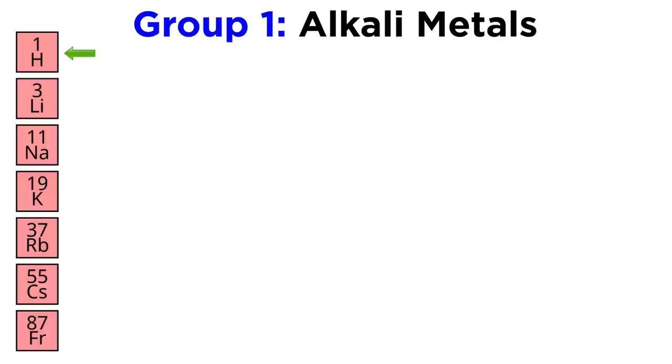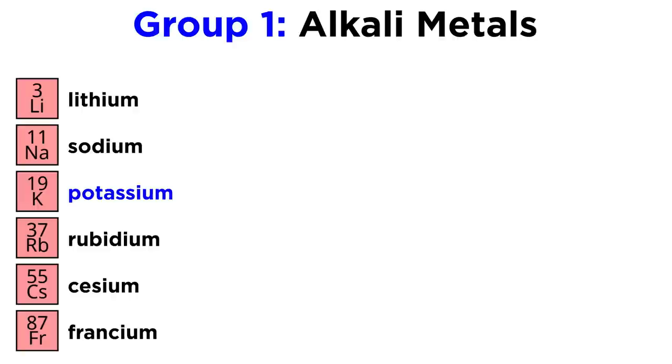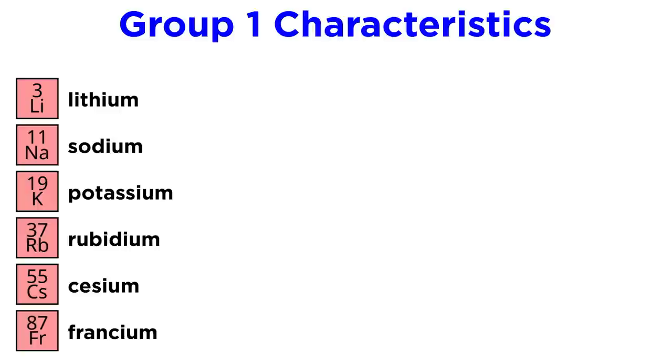With this straightened out, let's take a look at group one, also known as the alkali metals. Since hydrogen is not a metal and we covered it in the previous tutorial, that leaves us with lithium, sodium, potassium, rubidium, cesium, and francium.